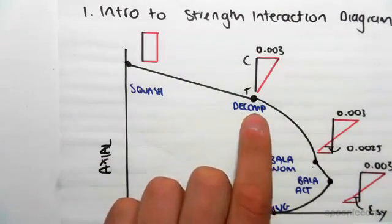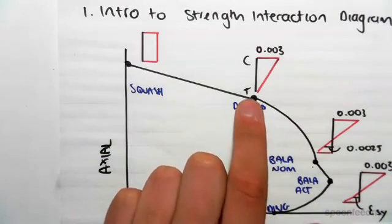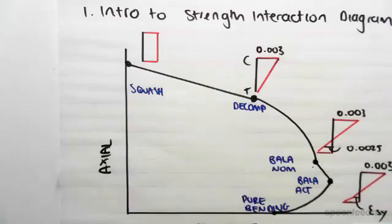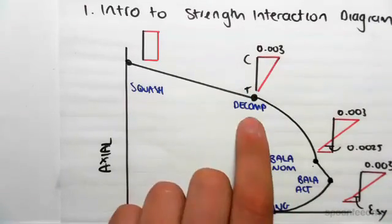The next point is the decompression point. The decompression point is when we have zero tension and compression of 0.003. I'm talking all this outside the code. This is all in the code. So, that's the decompression point.